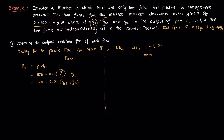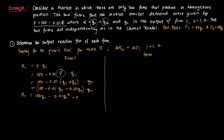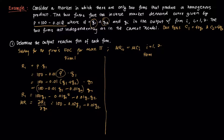Expanding, the revenue function for firm 1 is R1 = 100Q1 − 0.01Q1² − 0.01Q1Q2. Marginal revenue MR1 is the partial derivative of R1 with respect to Q1, which gives MR1 = 100 − 0.02Q1 − 0.01Q2.